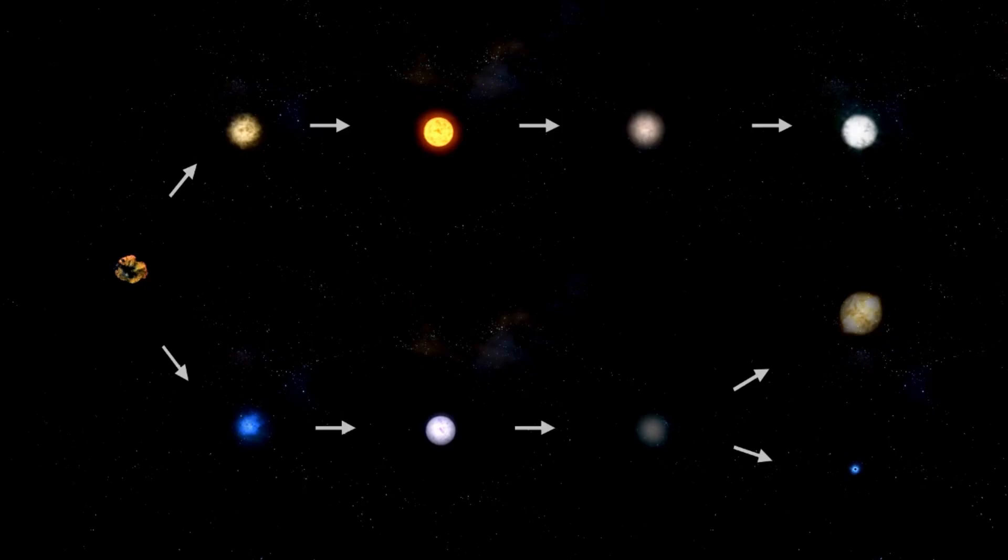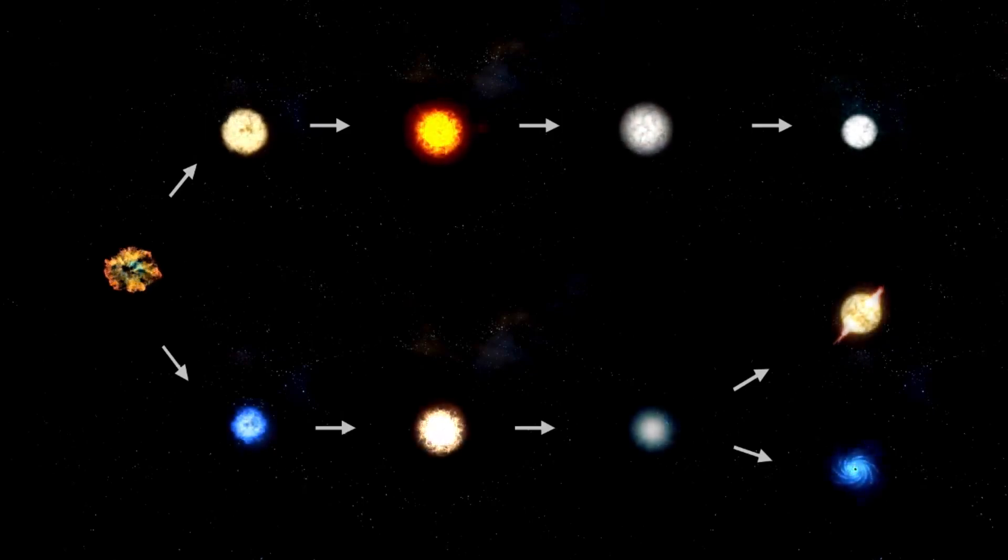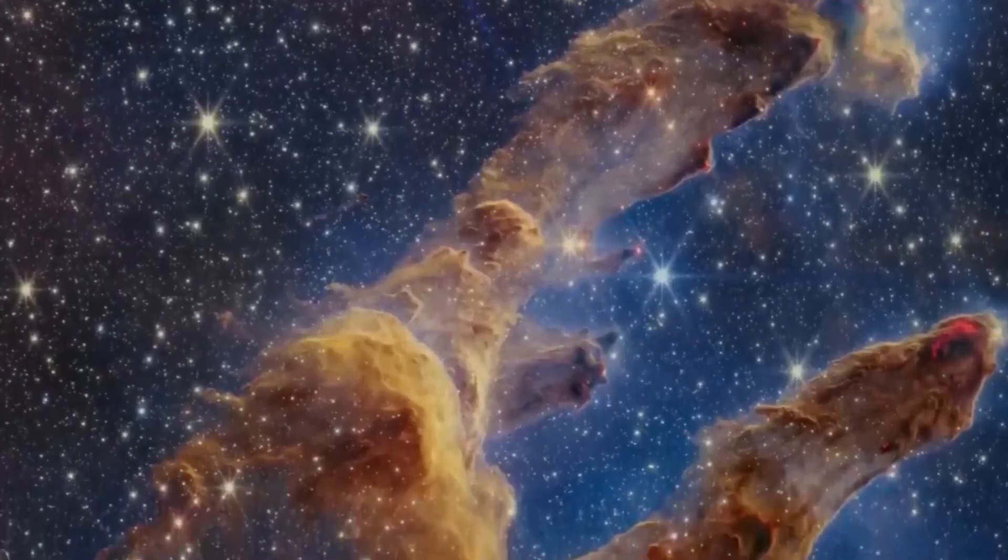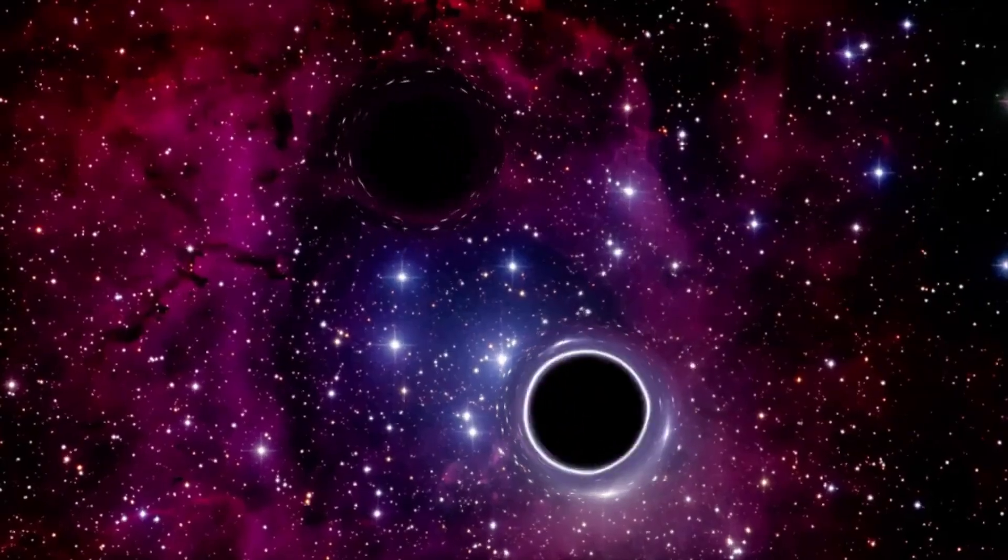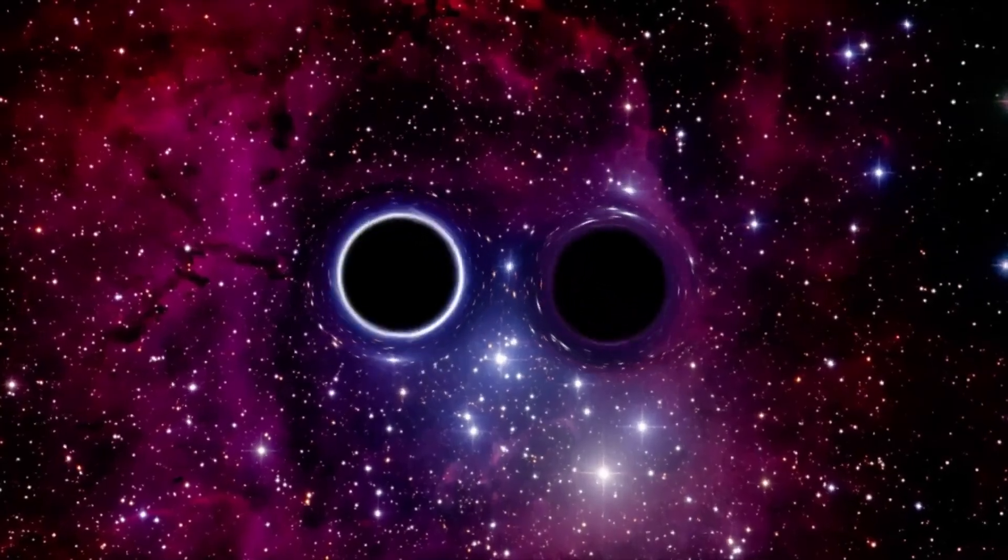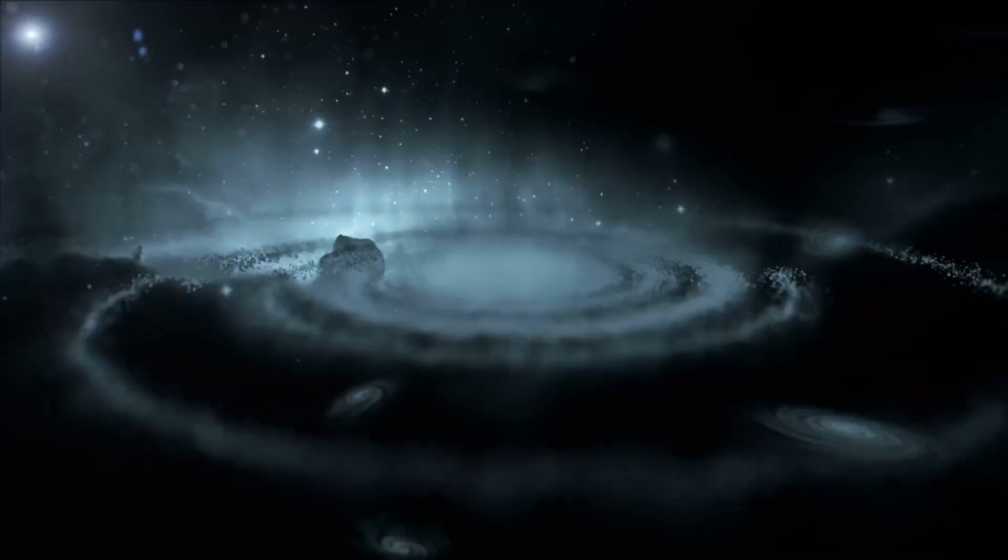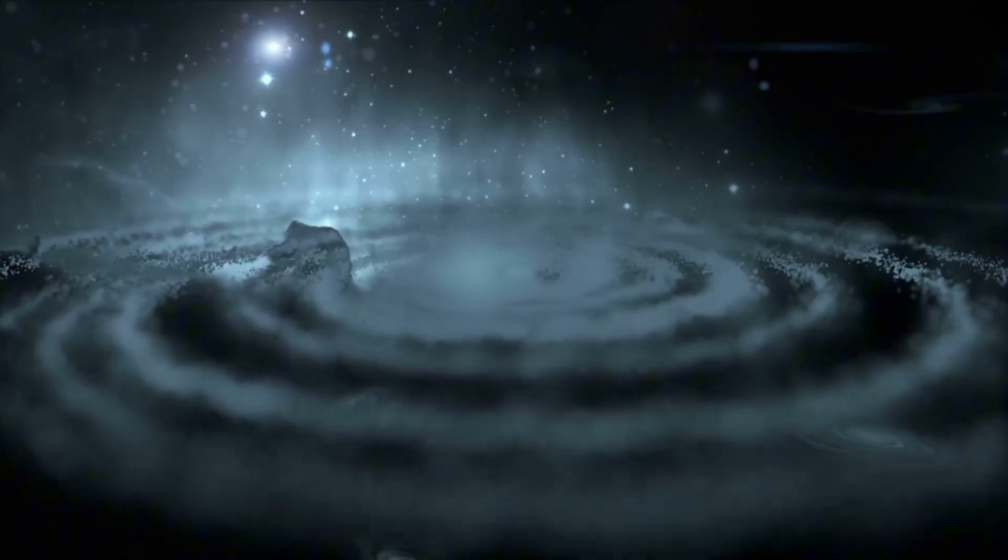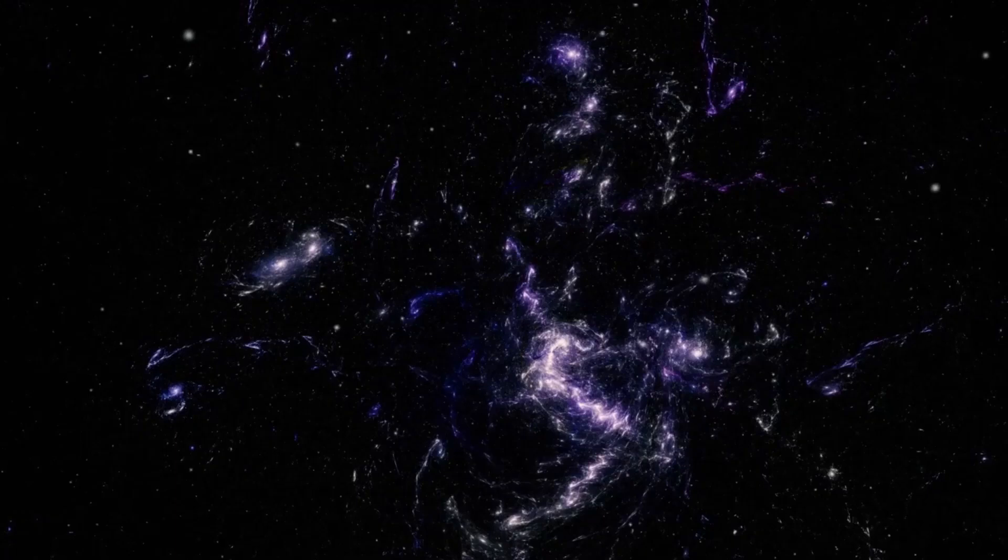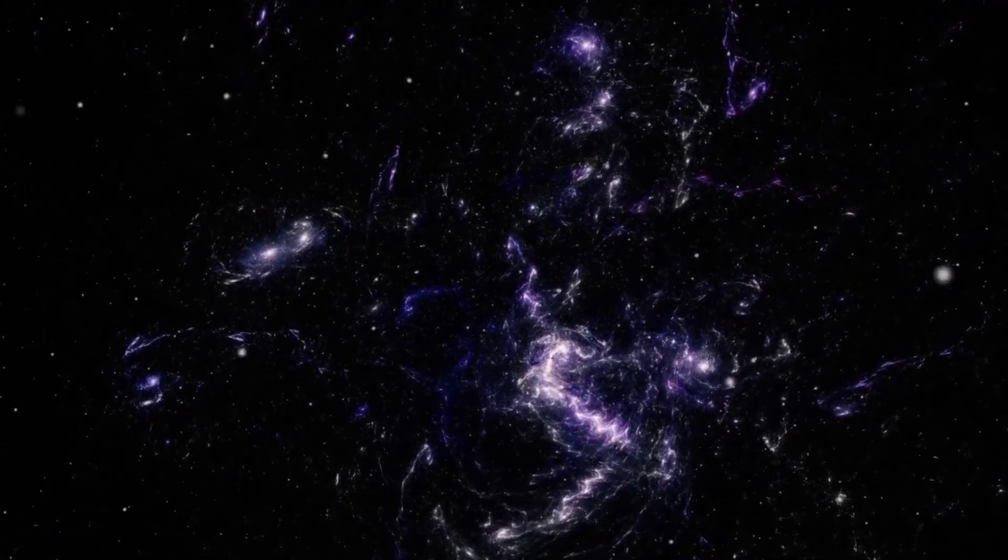Some physicists propose that the universe is a hologram, a 3D projection of information encoded on a 2D surface. If true, could our reality be a projection of an older, deeper cosmic structure? The idea that something existed before the Big Bang challenges everything we thought we knew about the universe. If Brian Cox and other scientists are correct, the Big Bang wasn't the beginning, but a transition in an eternal cosmic cycle. Remnants of past universes might still linger in black holes, cosmic radiation, and the quantum fabric of reality.